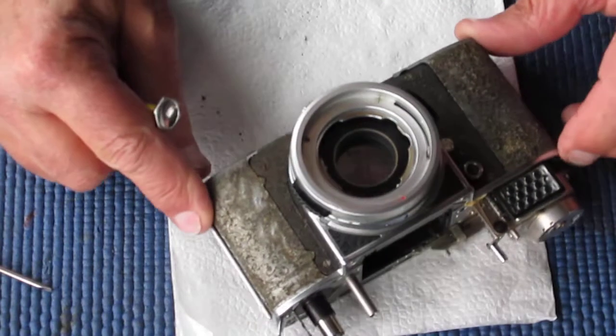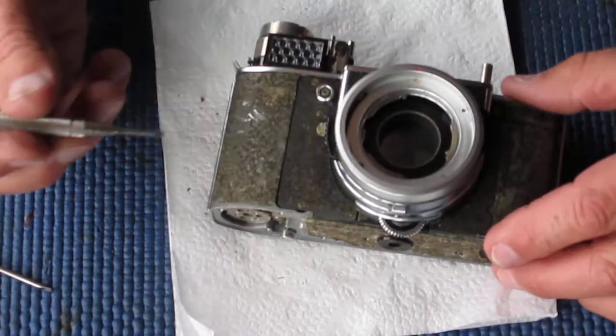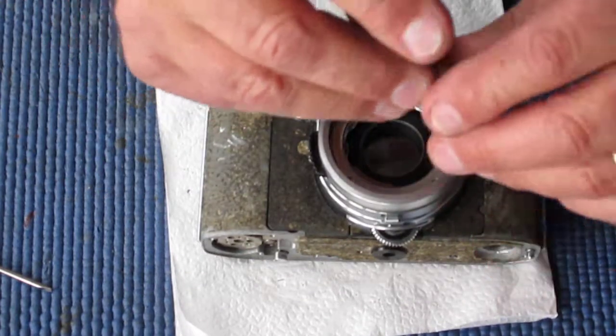Okay, now to start taking apart the front of the camera. We have three screws on the shutter that will need to come out.